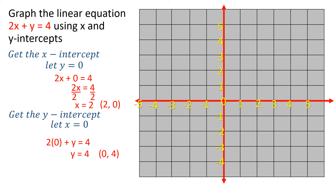After finding the x and y-intercepts, let's plot the points. (2, 0) is the x-intercept along the x-axis, and (0, 4) is the y-intercept along the y-axis. We connect these two points, and that is the graph of the equation 2x + y = 4.